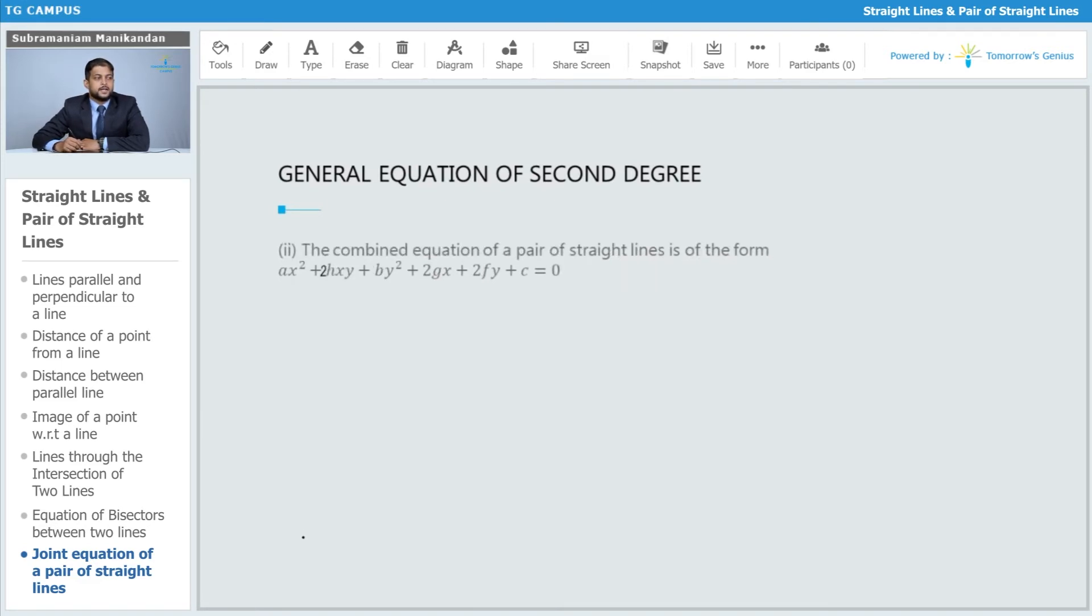The combined equation of a pair of straight lines is also of the form ax² + 2hxy + by² + 2gx + 2fy + c = 0 if the following condition is satisfied.